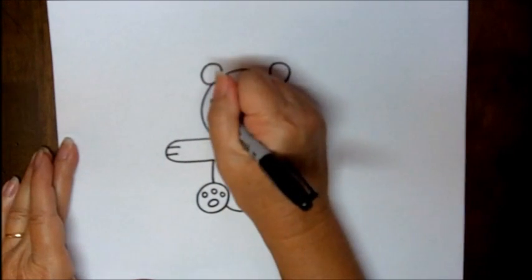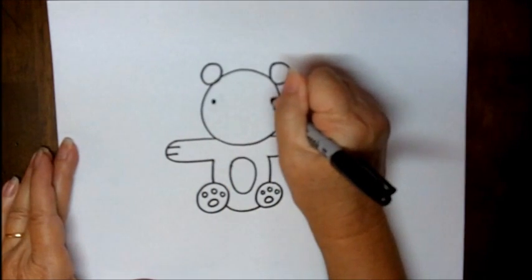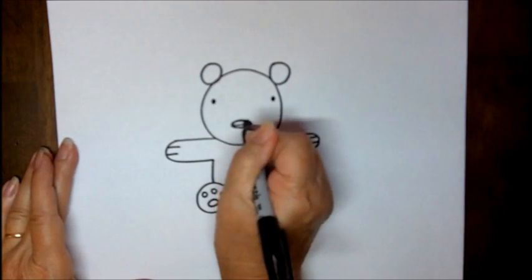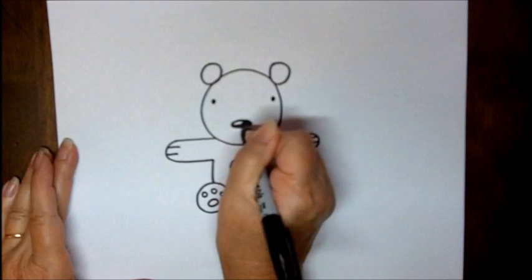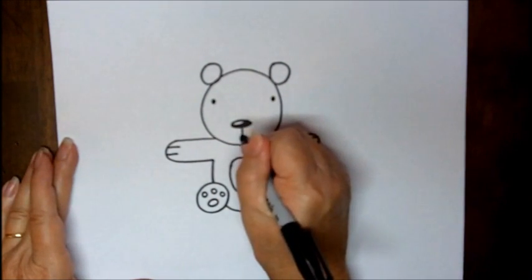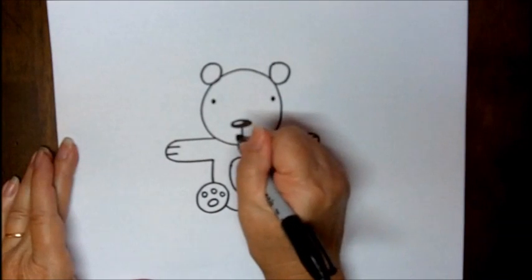For his face, we're going to make some wide set eyes, and a nose, has a little bit of a shine spot on it. Straight line down from that, and then a little smile.